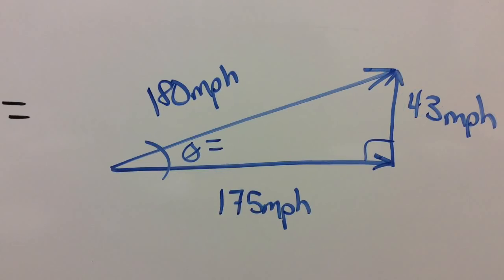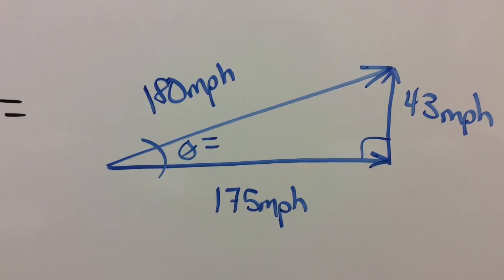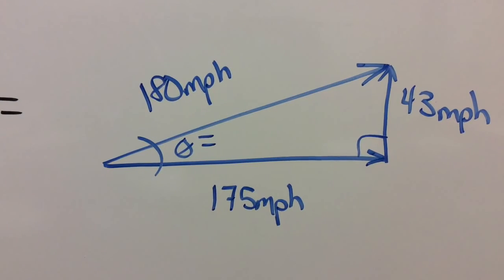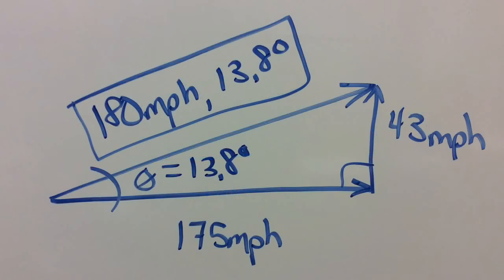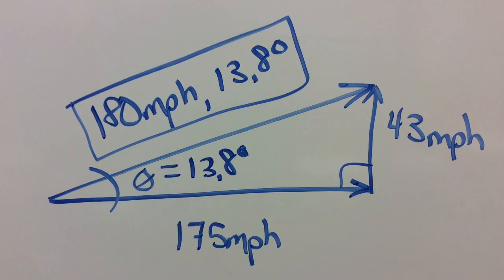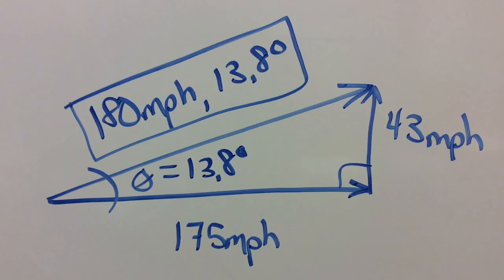Now the Pythagorean theorem: the square root of the quantity 175 squared plus 43 squared gives you about 180 miles per hour. And don't forget the direction. The inverse tangent of 43 over 175 gives you 13.8 degrees.